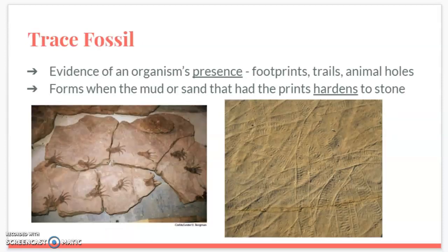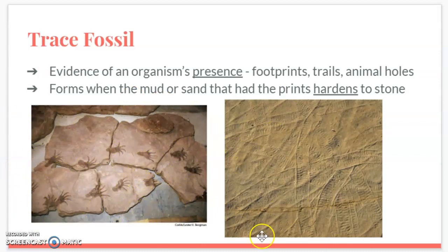Our last type of fossil is a trace fossil — evidence of an organism's presence such as footprints, trails, or animal holes. These form when mud or sand containing the prints hardens into stone. In this first picture we see little footprints of some organism walking away through mud that then hardened. We have evidence of an organism but no actual pieces of the organism — just evidence that it existed.